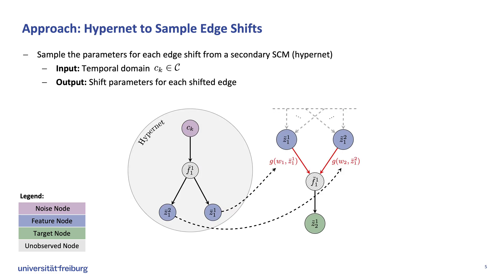Let's now discuss how we model these shifts. Instead of defining the functions explicitly, we employ a secondary SCM called HyperNet that takes a temporal domain index as input and outputs correlated shifts applied to the data-generating network.